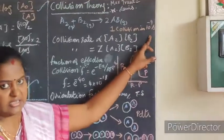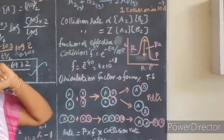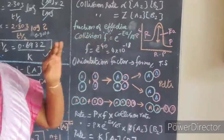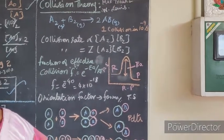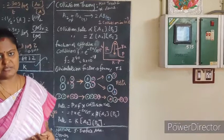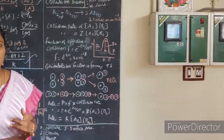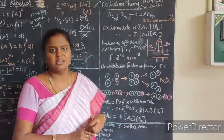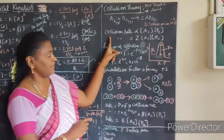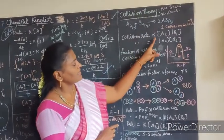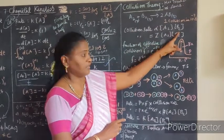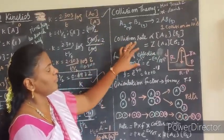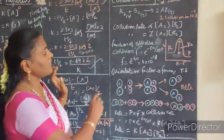We assume one collision occurs every 10^(-9) seconds. If that were the case, the reaction would end in 10^(-9) seconds, but it does not occur. One more factor must be considered: not all molecules involved in collision may be in effective collision. We are in search of effective collision. Also, all molecules involved in the chemical reaction must possess the minimum energy called activation energy EA. So these two points are very important. Collision rate is directly proportional to the initial concentration of the reactant particles; removing the proportional sign, Z is the collision rate constant.